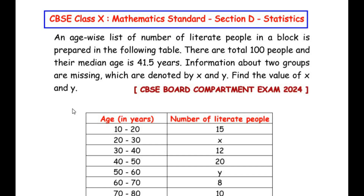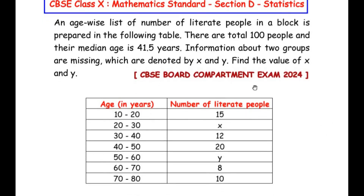Hello and welcome to my channel. In this video we are going to solve a section D question from the statistics chapter. An age-wise list of the number of literate people in a block is prepared in the following table. There are a total of 100 people and their median age is 41.5 years. Information about two groups is missing, denoted as x and y. Find the value of x and find the value of y.